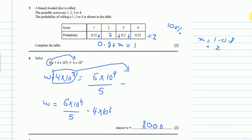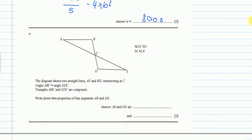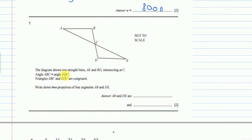So let's see question number 7. The diagram shows two straight lines. A, E and B, D. From B to D. And they are intersecting at C. Angle ABC is equals to EDC. ABC. This angle is equals to EDC. EDC. This angle. They are equal.